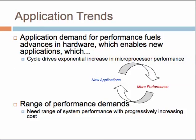General application trends tend to be where new applications drive more performance, which fuels advances in hardware, which in turn enables the development of new applications. This is the cycle — the exponential increase in microprocessor performance. Performance yields capability for new applications, and new applications feed back into demanding more performance. The range of performance demands generally increases progressively with cost: a bigger system has more cost and more performance.